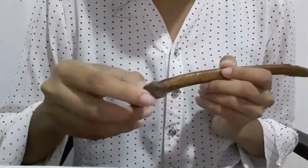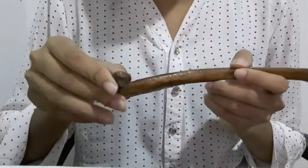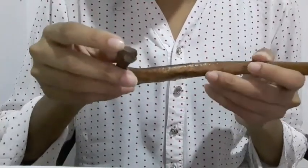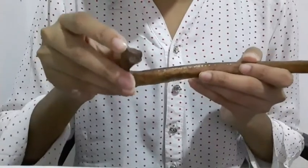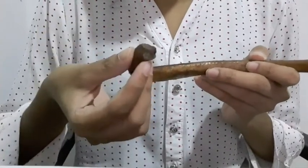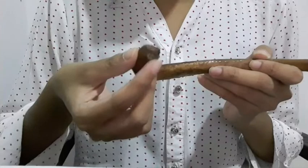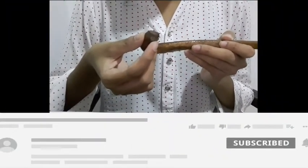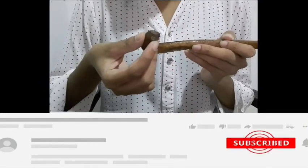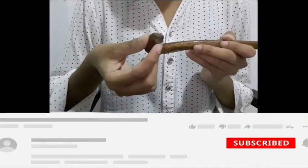The head has two articular facets. The upper facet articulates with the lower demifacet of the body of the vertebra above, and the lower facet is large and articulates with the upper demifacet on the side of the body of numerically corresponding vertebra.